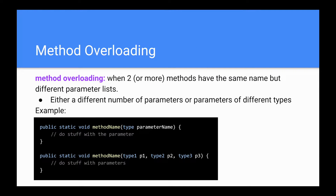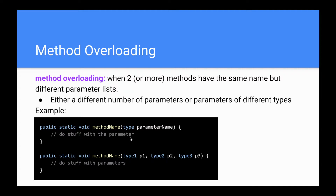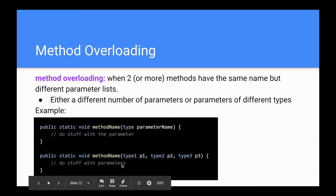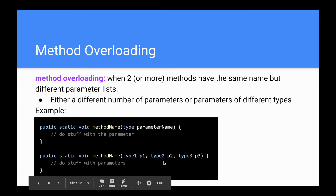Method overloading is when two or more methods have the same name but different parameter lists — either a different number of parameters or parameters of different types. For example, you could have two methods both called method name: the first with one parameter, and the second with three different parameters. This allows the compiler to recognize them as two distinct methods.